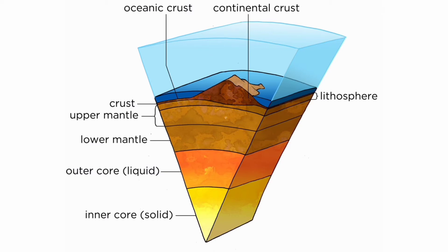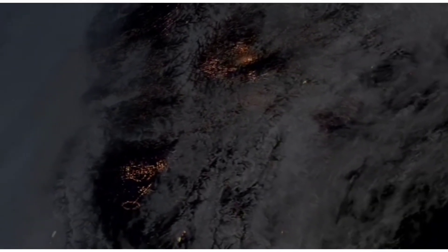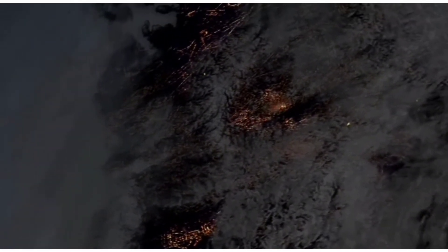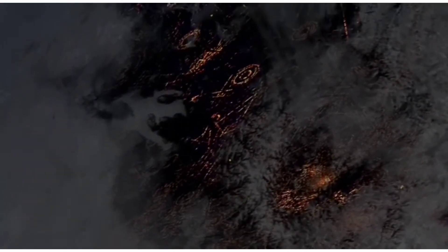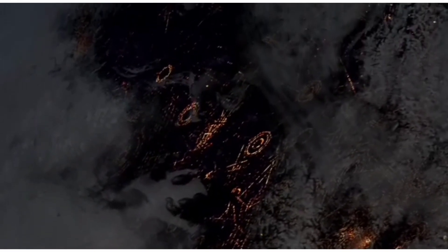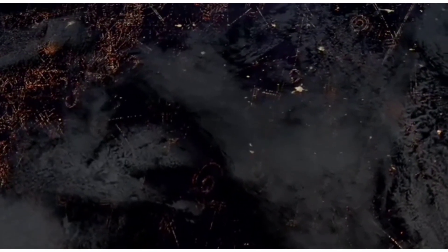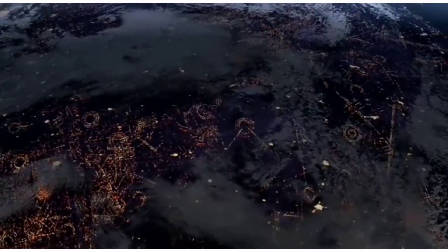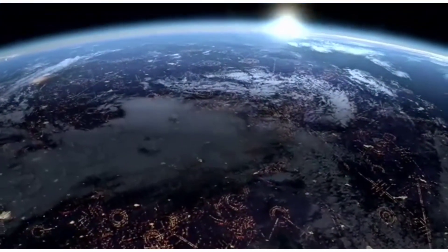The uppermost part of the mantle is solid and forms the back of the crust. It is made of the heavy rock peridotite. The continental and oceanic plates make up the uppermost layer of the mantle, called the lithosphere. The upper asthenosphere is associated with the formation of mountains, volcanoes, and earthquakes. The lower asthenosphere has rocks and minerals, while the lower mantle is hotter, denser, and much less ductile.